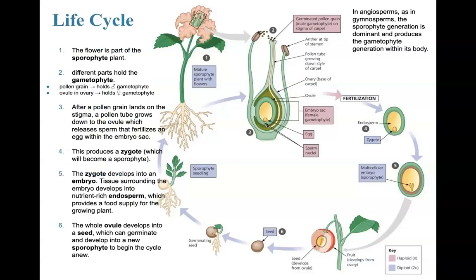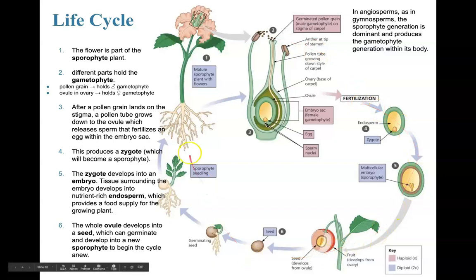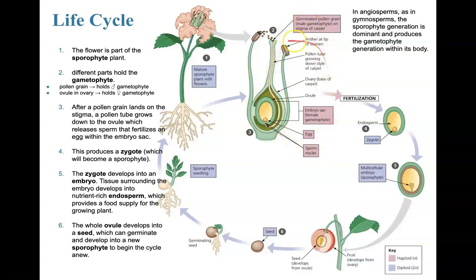Everything just covered, written in bullet format: in angiosperms, as in gymnosperms, the sporophyte generation — everything colored in blue — is the diploid generation and is dominant. A very small portion of the life cycle is the gametophyte generation. There is a constant alternation between generations throughout the angiosperm life cycle, but it's the sporophyte that dominates.